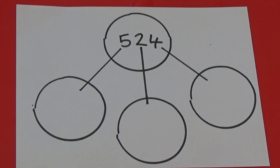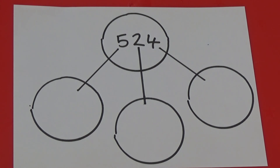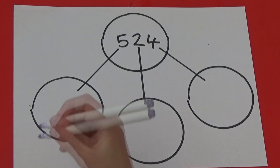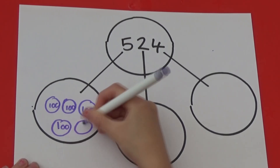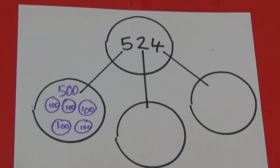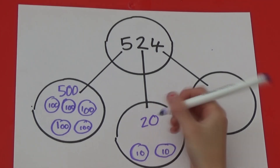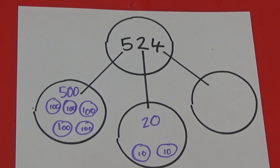Once you are happy showing the numbers using the counters, you can draw them. I am going to start by sketching counters on the part-whole model. The 5 has a place value of 500, so I am going to draw five 100 counters. The 4 has a place value of 4, so I am going to draw four ones counters.